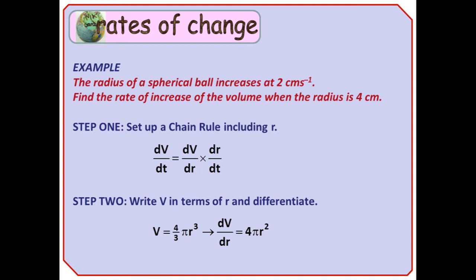For step 2, we write V in terms of r and differentiate. It's a spherical ball, so V equals 4 thirds pi r cubed, which we can differentiate with respect to r to get dV by dr equals 4 pi r squared.